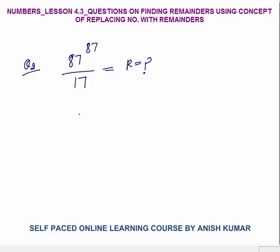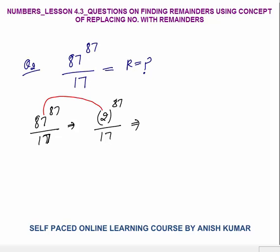Question number 2: find the remainder when 87^87 is divided by 17. First, replace the number with its remainder: 87 ÷ 17 gives remainder 2 (since 17×5 = 85), so the problem becomes 2^87 ÷ 17. Now, 2^4 = 16 ÷ 17 gives remainder −1, because 16 = 17 − 1. So 2^4 ÷ 17 has remainder −1.